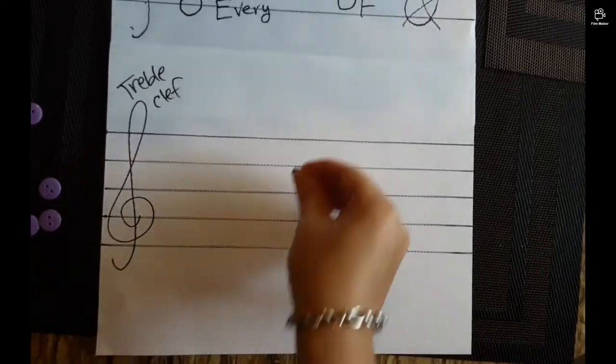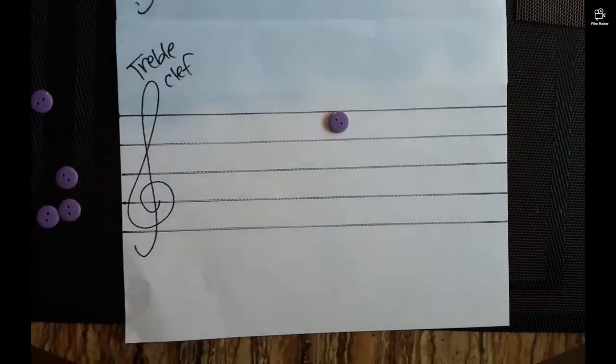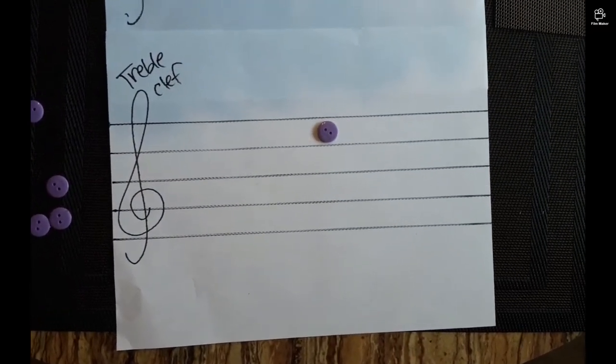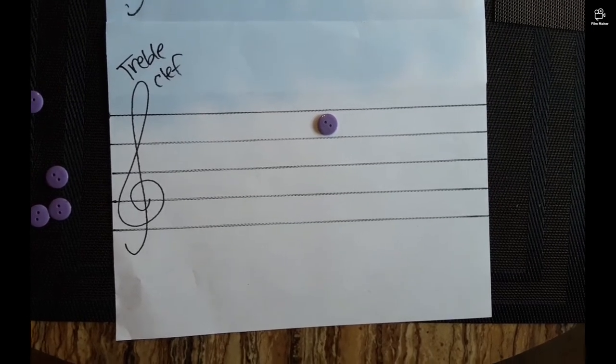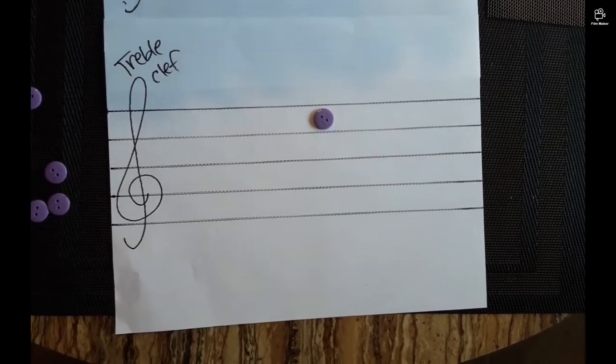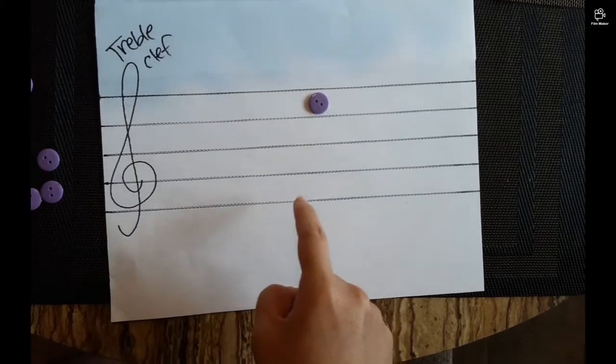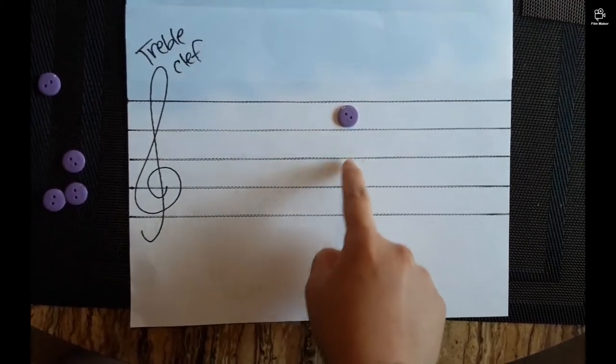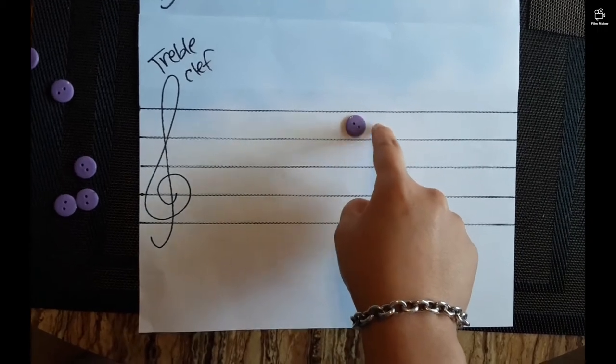Next one. What is the name of this note? It's a space note. What do we say for the space notes? Space rhymes with face. How do we spell face? F is down here. A, C, E. So, that's E.